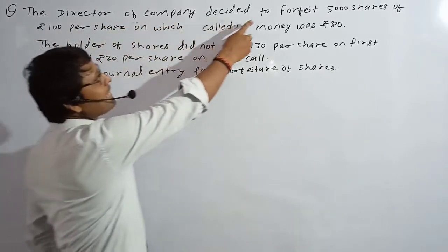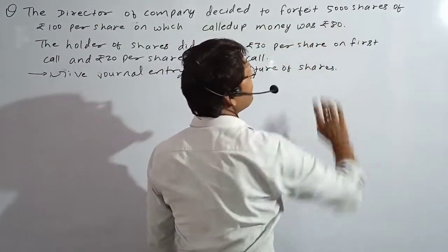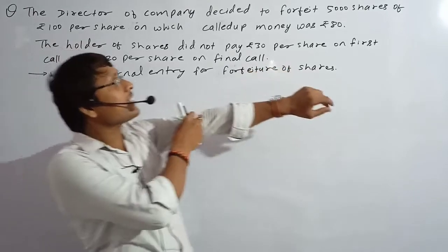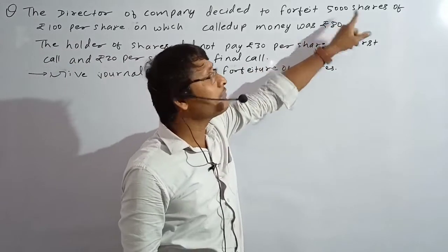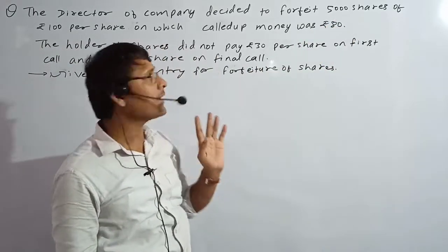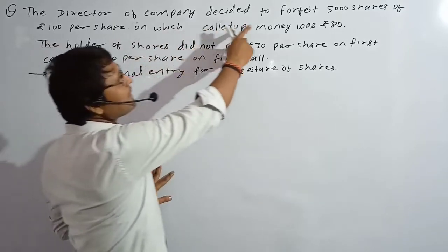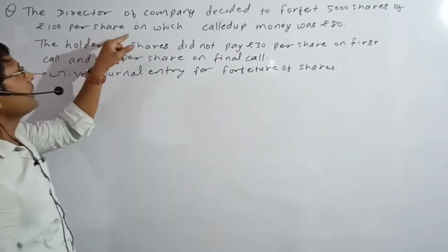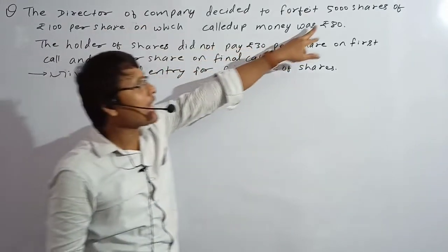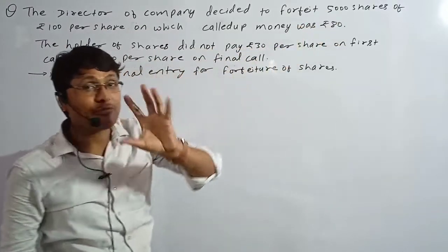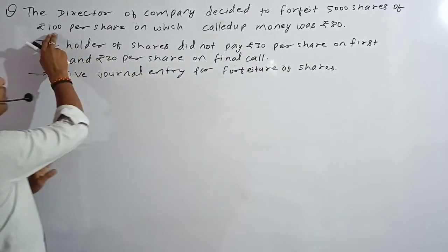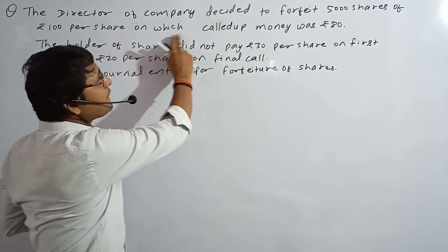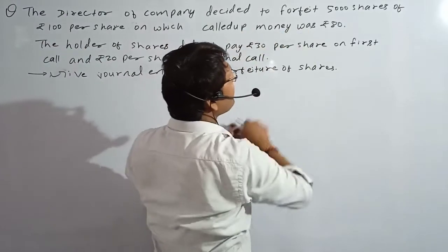Look what is written. The director of the company decided to forfeit 5,000 shares of ₹100 per share. Total shares: 5,000. Face value: ₹100. On which called-up money was ₹80.